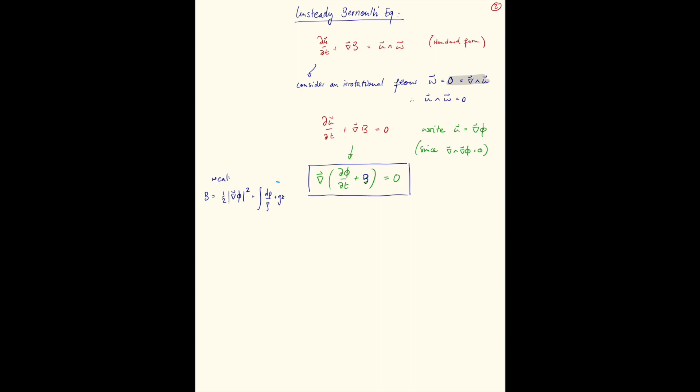Let me copy that and paste it here. So, I'm substituting this in for b, and then I can write my Bernoulli equation for unsteady flow as the gradient of d phi dt plus our standard Bernoulli function, has to be zero.